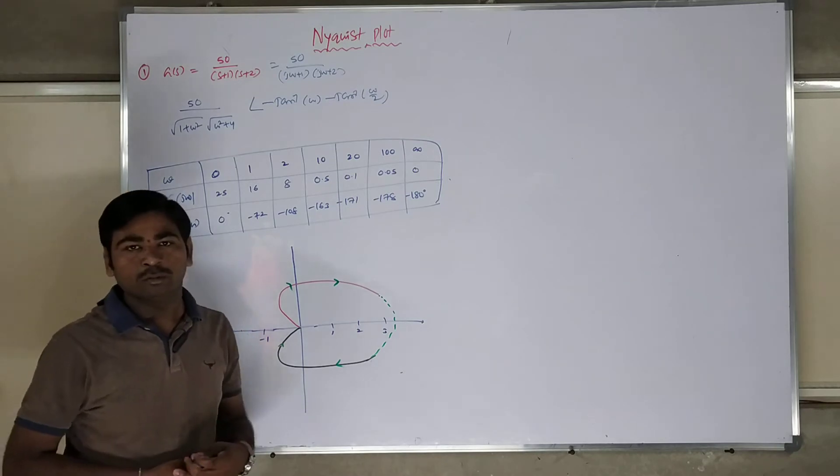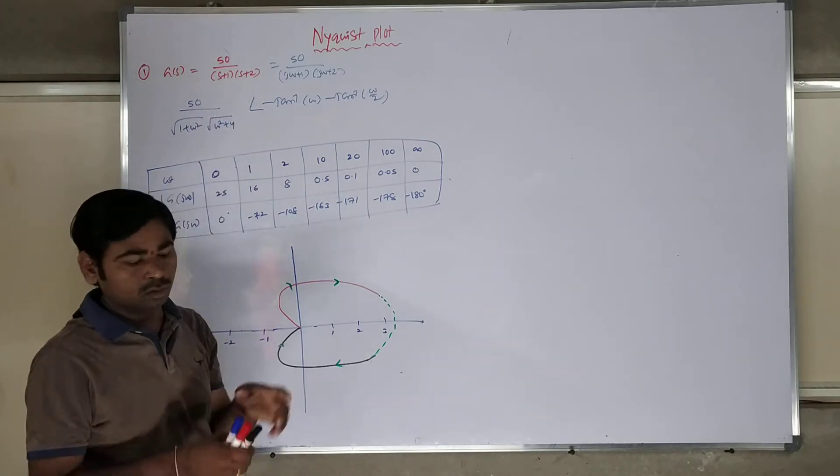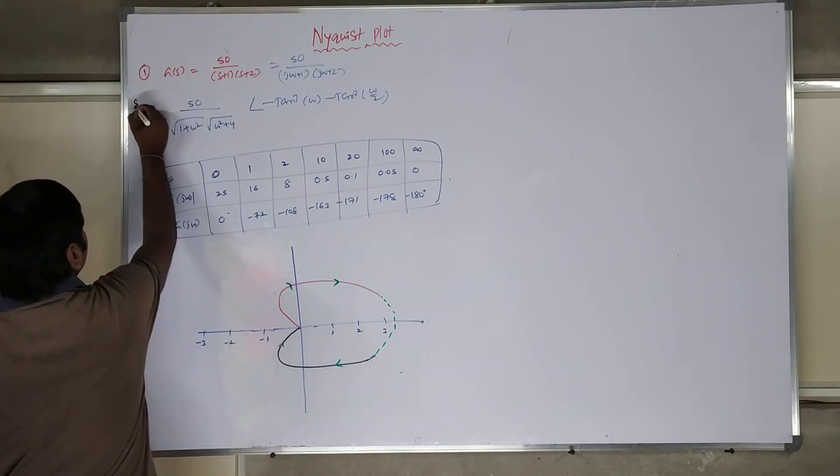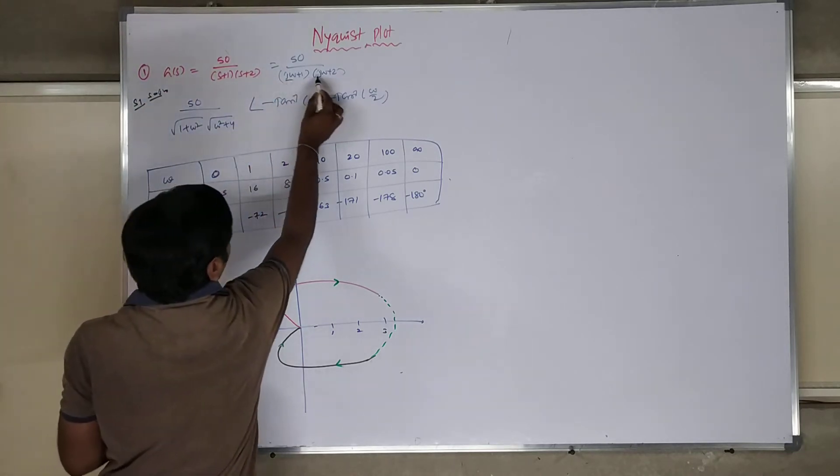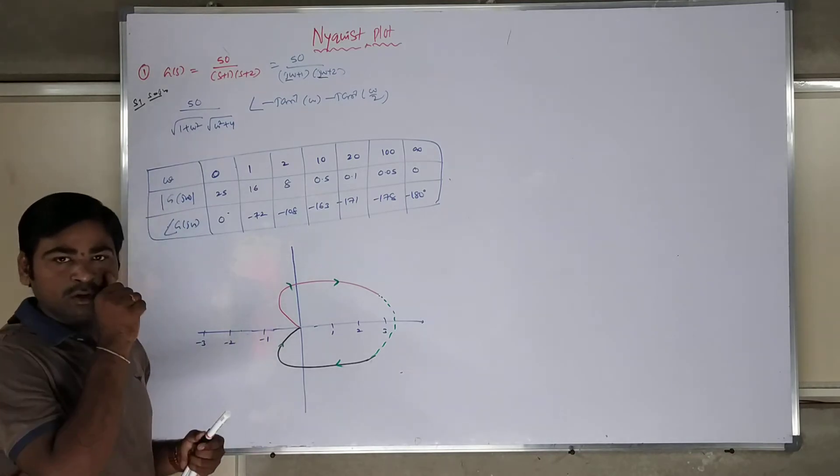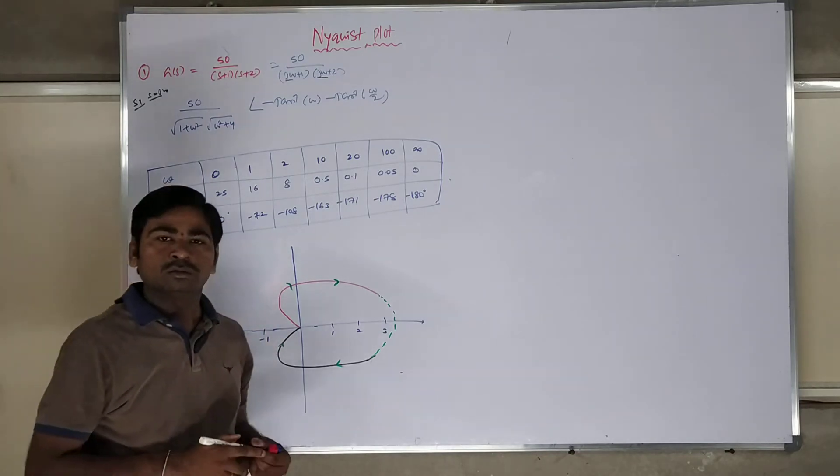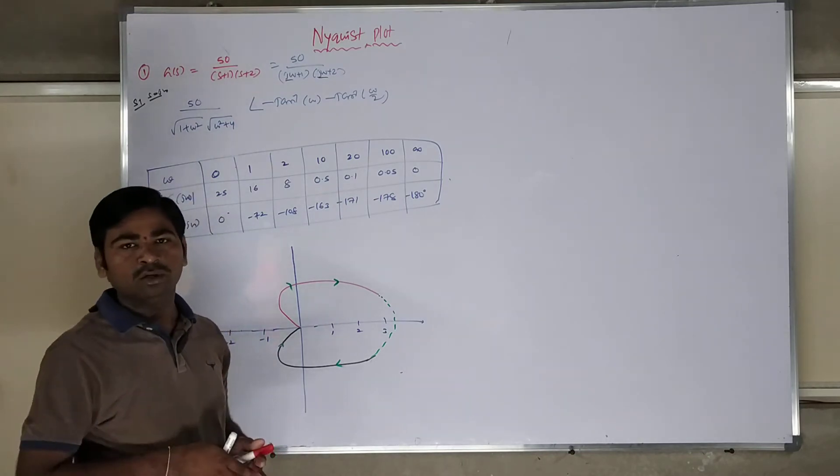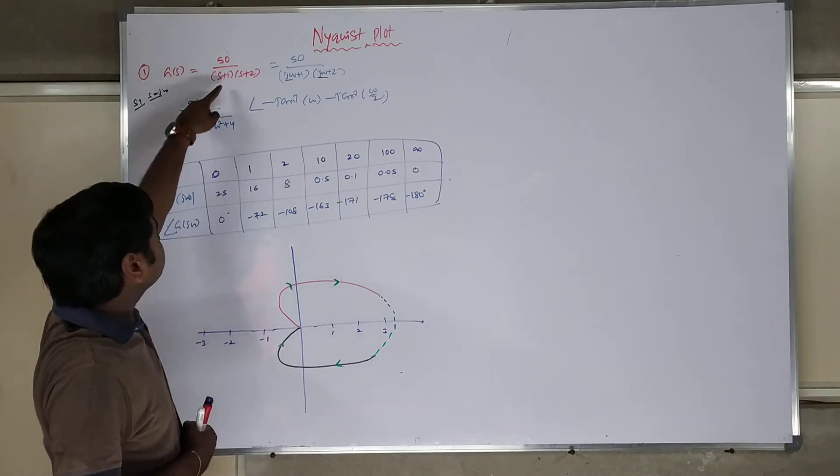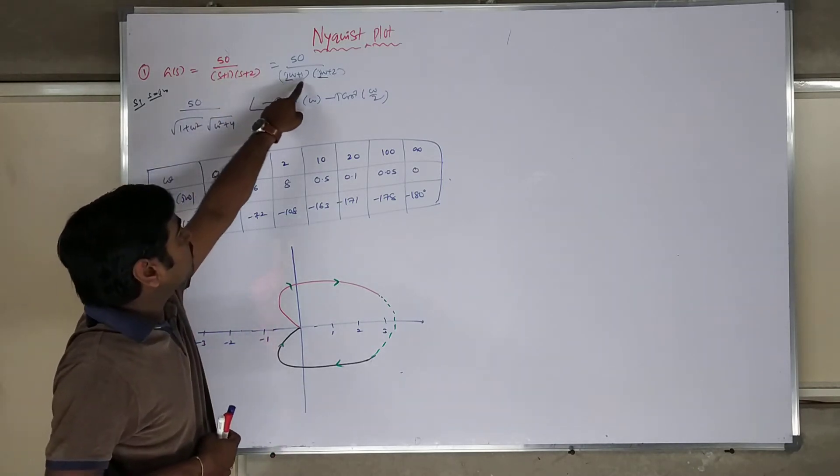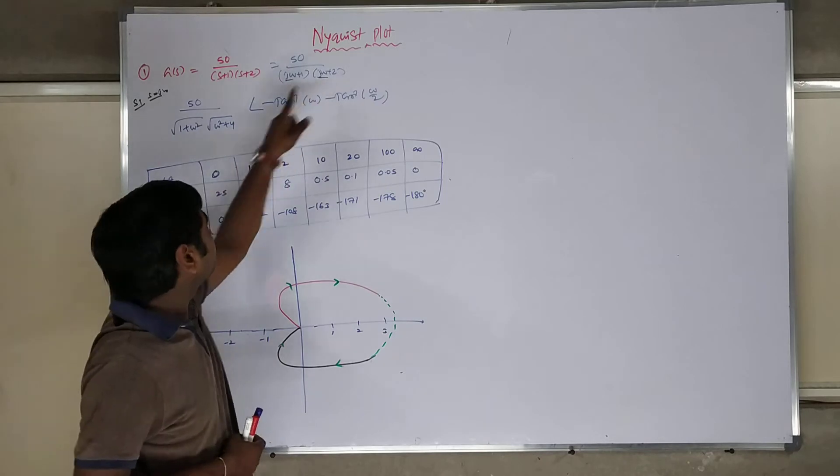So what is the first step for polar plot? Substitute S is equal to j omega. I am substituting j omega plus 1, j omega plus 2. Then after that, when you are doing that polar plot, Nyquist plot also, magnitude and phase angle is to find out. Magnitude means 50 by root of omega square plus 1 and root omega square plus 4.